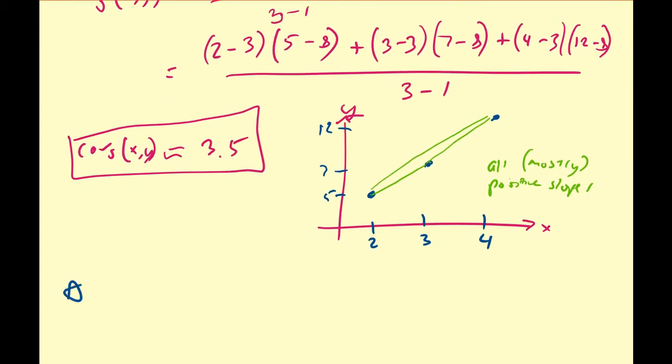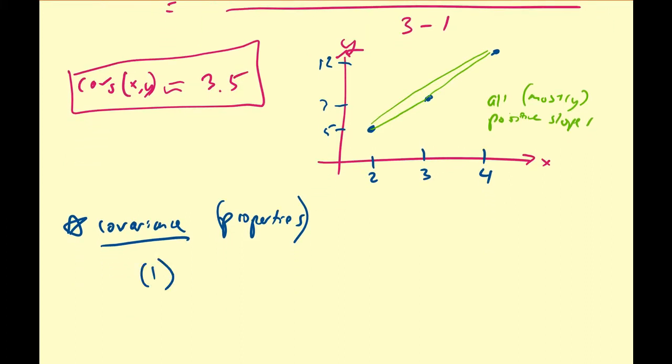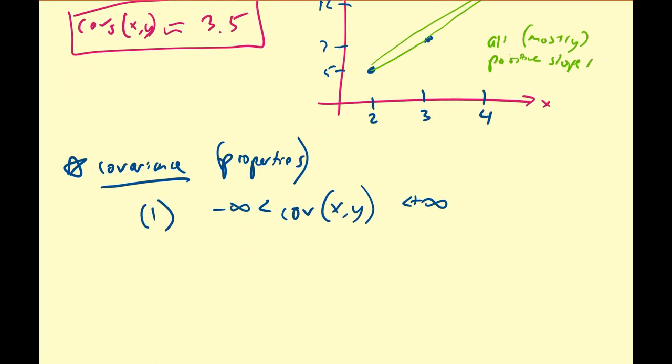So we can state some of the properties for the covariance as follows. The first thing that some people will realize is the covariance between two values X and Y is between negative infinity and infinity. So that means you can have a positive or a negative or a zero covariance, depending on your different values of Y. Unlike the variance of a single data set, where variance can only be positive, covariance doesn't have that special property.